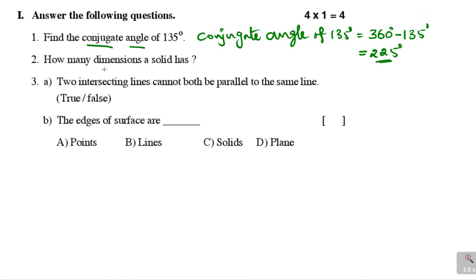How many dimensions does a solid have? A solid has three dimensions. If we take a cuboid, it has length, width, and height. Like that, a solid has three dimensions.